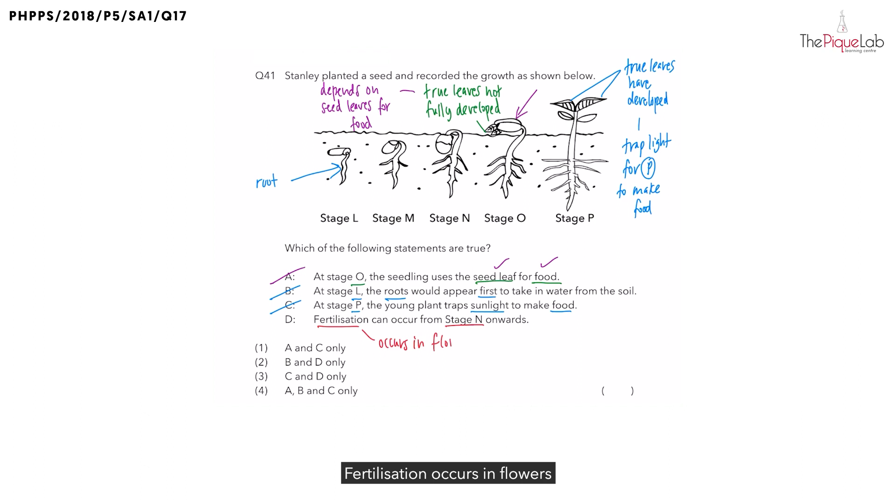Fertilization occurs in flowers. And the flowers only develop in the adult stage. Can I say that fertilization occurs from stage N onwards? I cannot say that. Since there are no flowers in stage N, there will be no pollination and no fertilization happening in stage N. Remember, we are looking for statements which are true. All the statements are true except for statement D, giving us the answer as option 4.